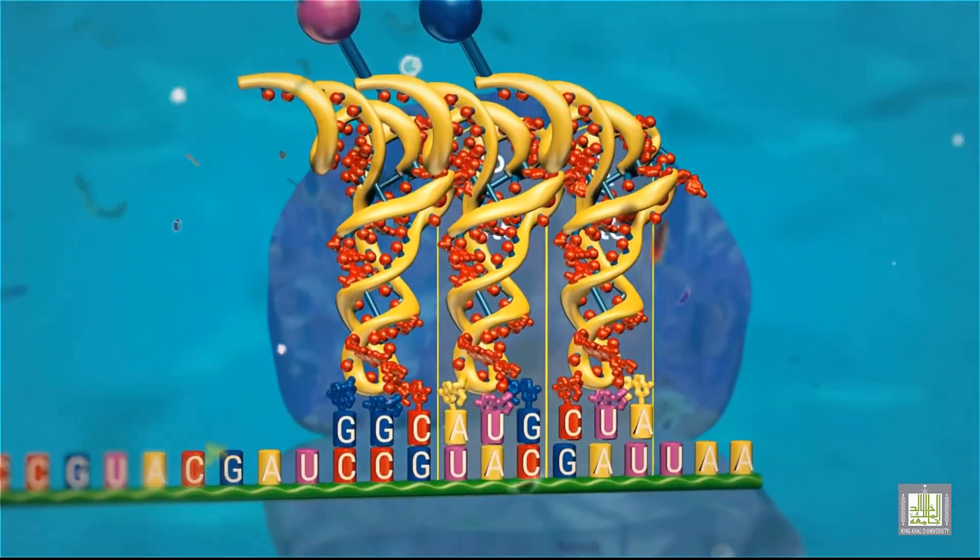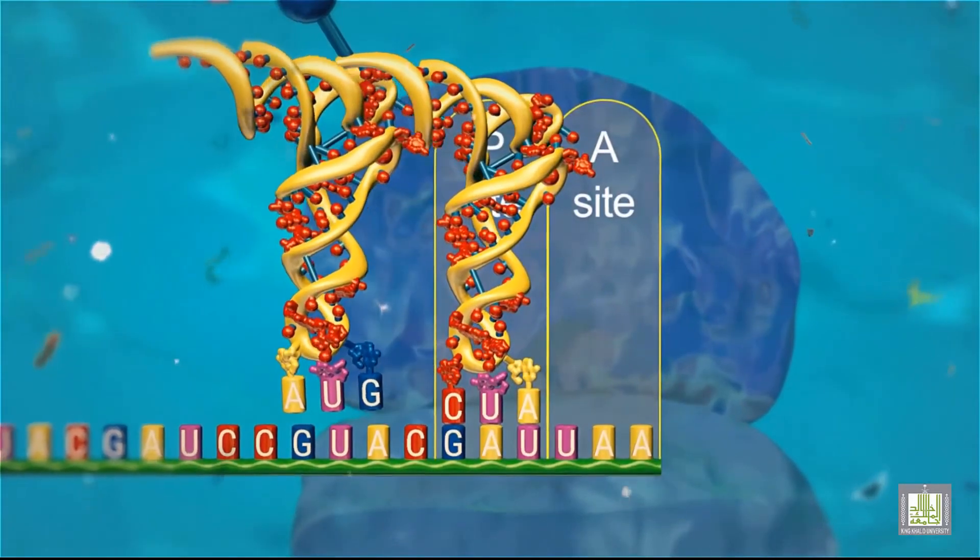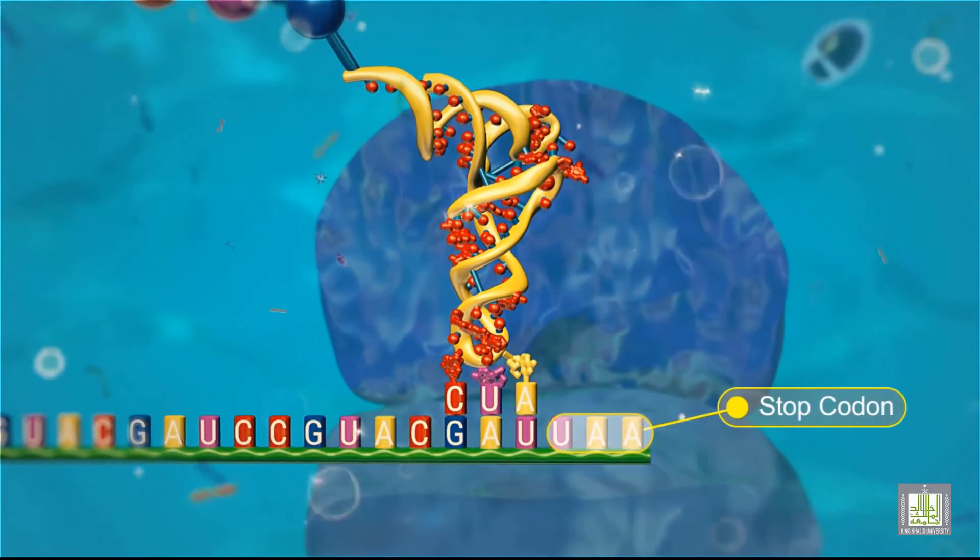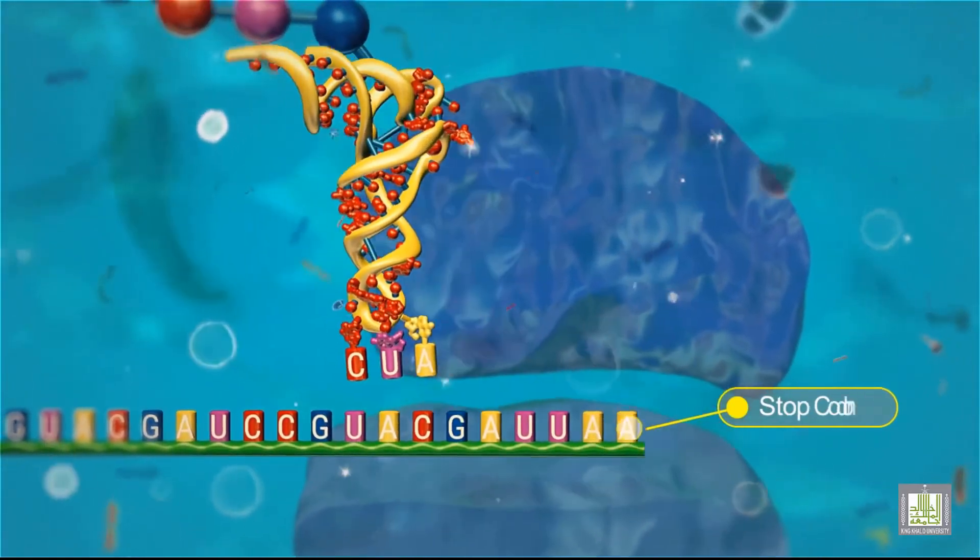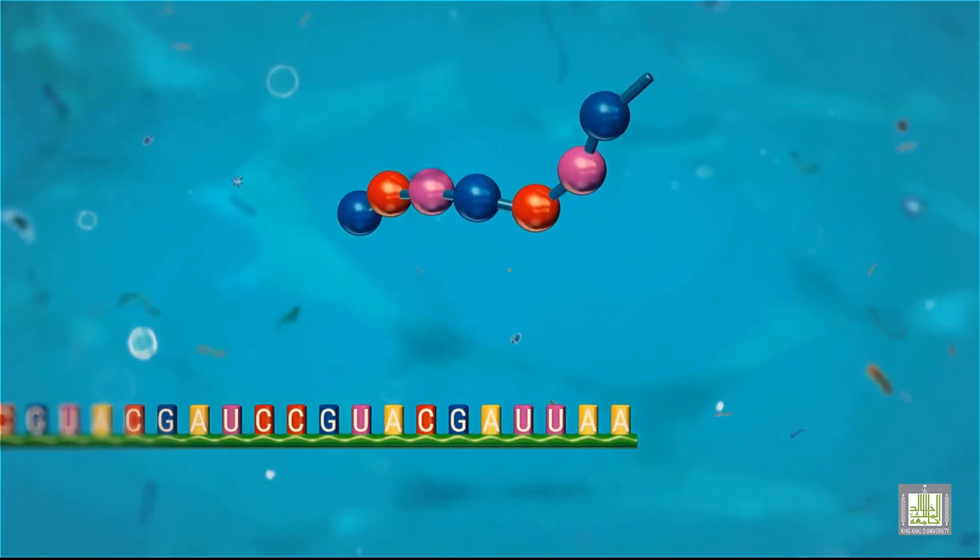Elongation of the polypeptide is terminated when the ribosome reaches a codon that does not code for an amino acid, called a stop codon. The ribosome dissociates into the smaller and larger subunits, and the messenger RNA and protein are released.